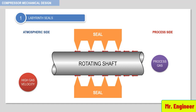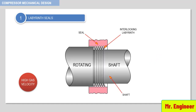In such cases, an interlocking labyrinth seal can be used. As shown in this example, the shaft also has teeth which interlock with the teeth of the seal, thus preventing flow of gas in a straight line.